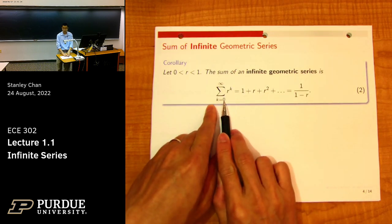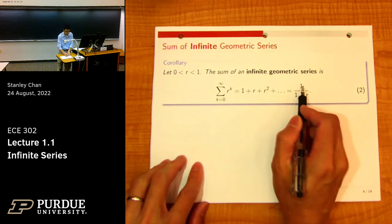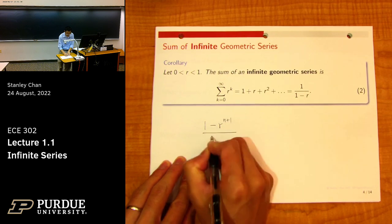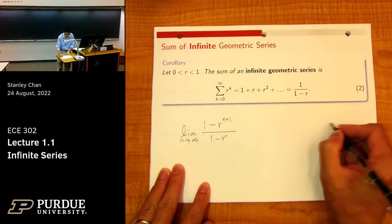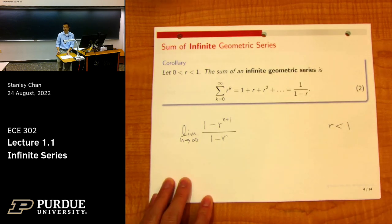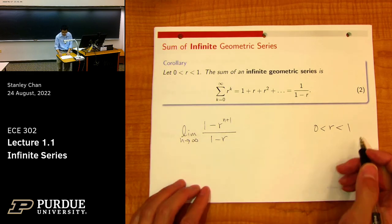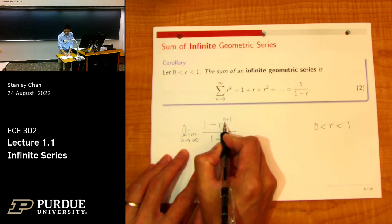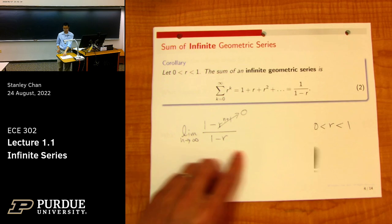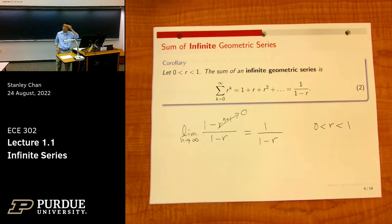Now let's go to the infinite geometric series, where you're summing from zero to plus infinity. You get 1/(1 − r). This comes from taking the limit of (1 − r^(n+1))/(1 − r) as n → ∞, assuming r < 1 — and here I'll also say r > 0 since it's going to represent a probability, which cannot be negative.